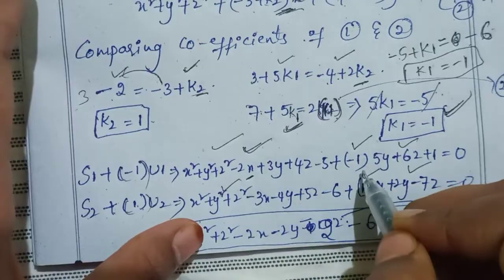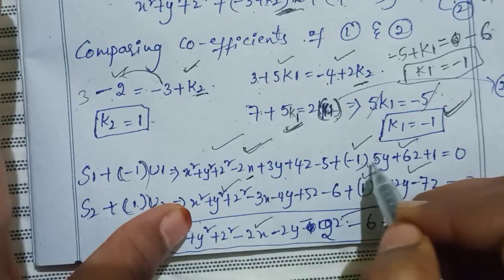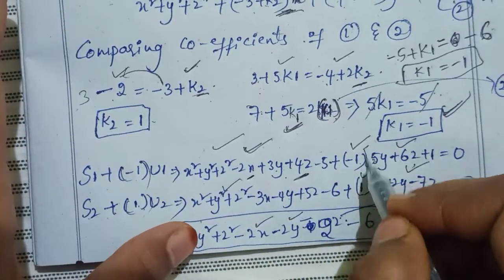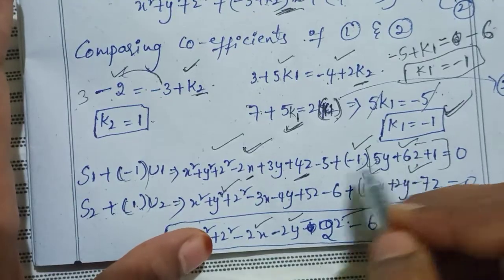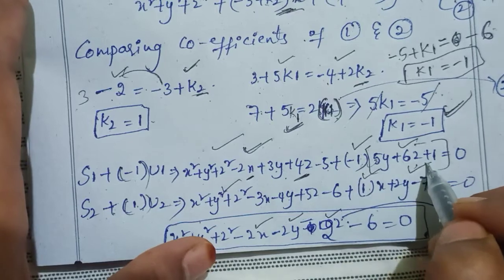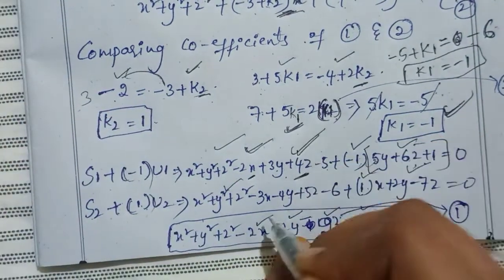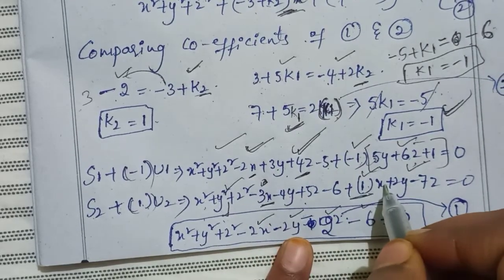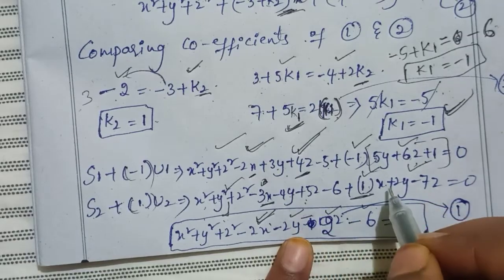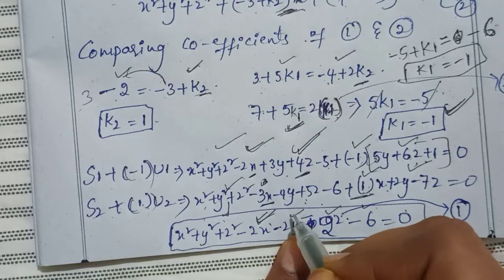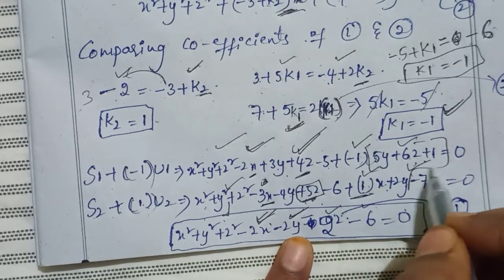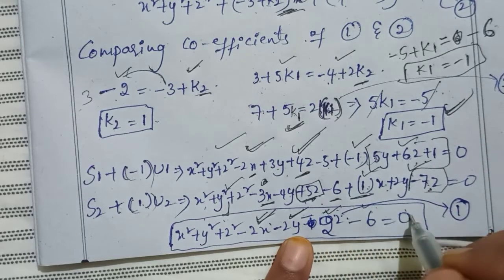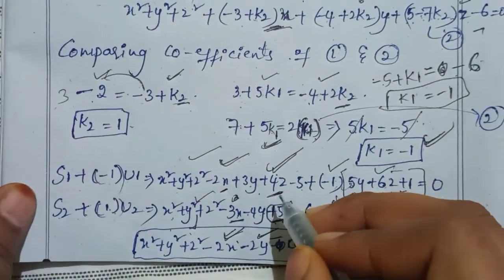Substituting: x²+y²+z²-3x-1(x)=-2x, -4y+2y=-2y, 5z-7(1)z=-2z, constant -6. The equation is x²+y²+z²-2x-2y-2z-6=0. This is the equation of the sphere.